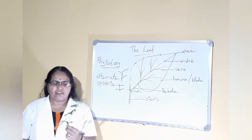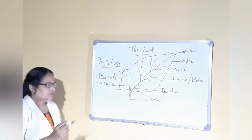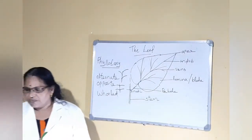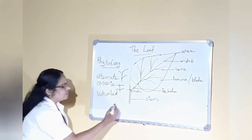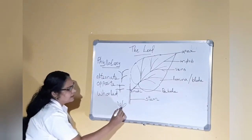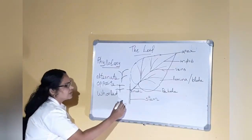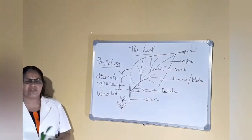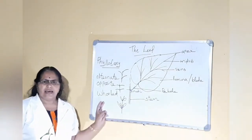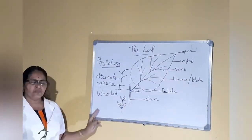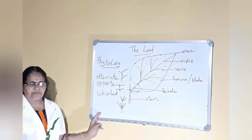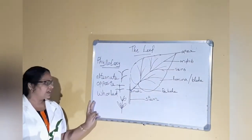Another type of arrangement of leaves is whorled (W-H-O-R-L-E-D). Whorled means round — from a node, many leaves arise, as in the nerium plant or oleander. This type of arrangement is called whorled phyllotaxy. So these are the three types of arrangement of leaves on the stem. The pattern of arrangement of leaves on the stem is known as phyllotaxy: alternate phyllotaxy, opposite phyllotaxy, and whorled phyllotaxy.